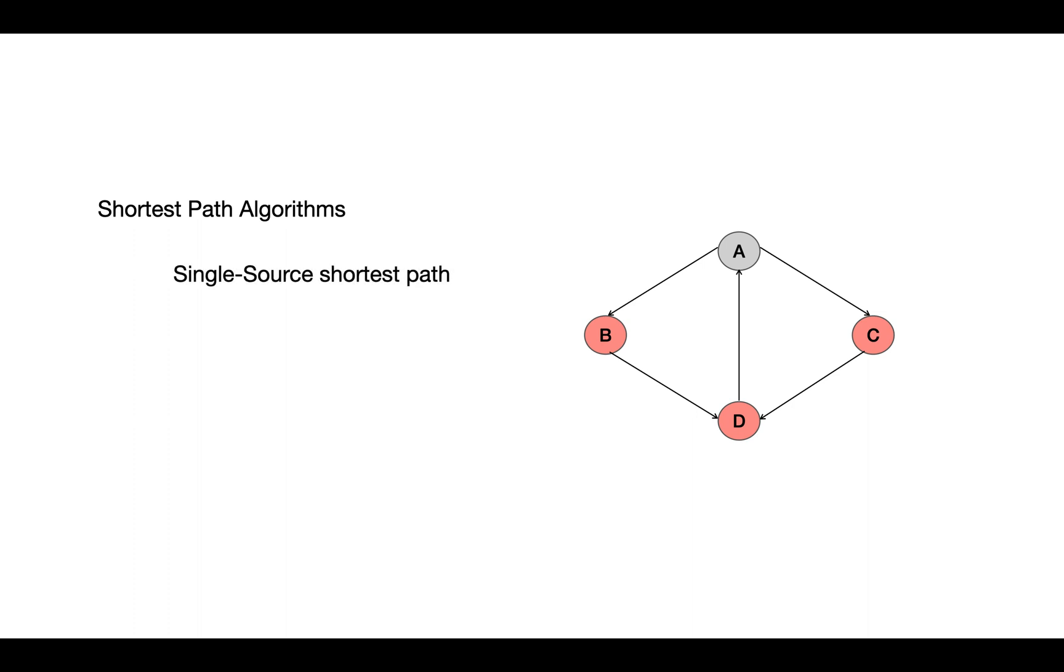For example, Dijkstra's algorithm falls in this category where we are given a source and we need to find the shortest path from this source to all the other vertices.